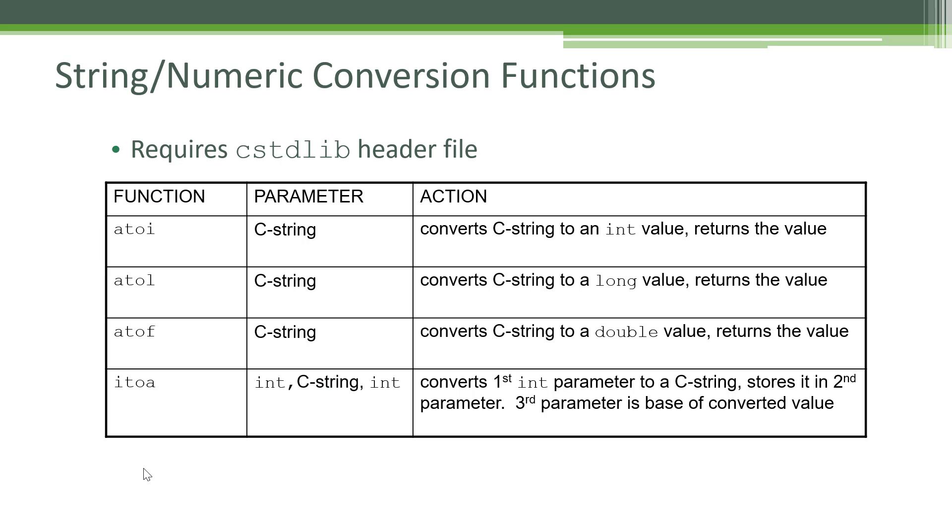Another set of really handy functions are conversions from strings to integers and integers to strings. This requires that you include the cstdlib header file. atoi converts a C string into an integer, atol converts to a long, atof converts to a double, and then you can go back the other way where you can convert an integer to a character string in C using itoa.